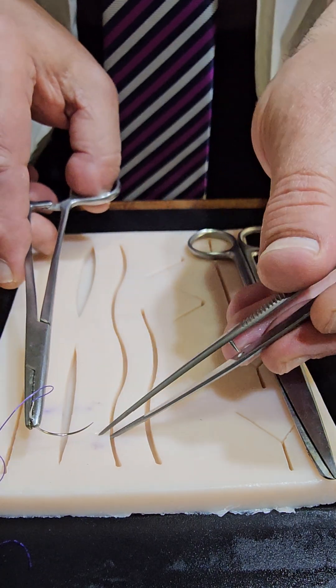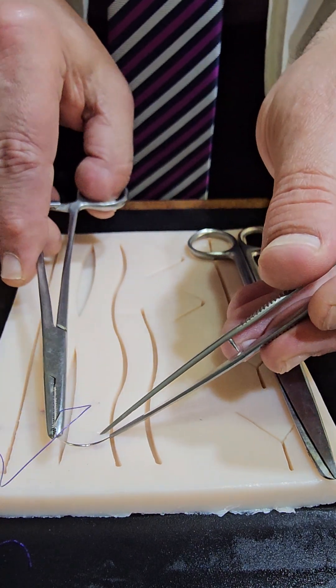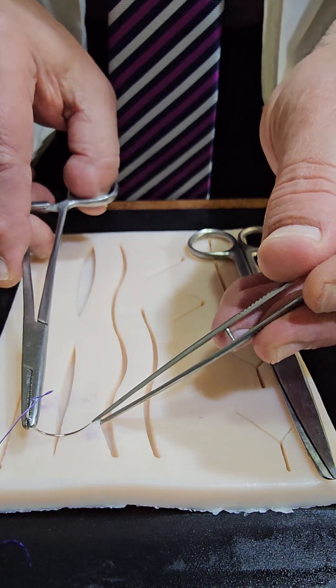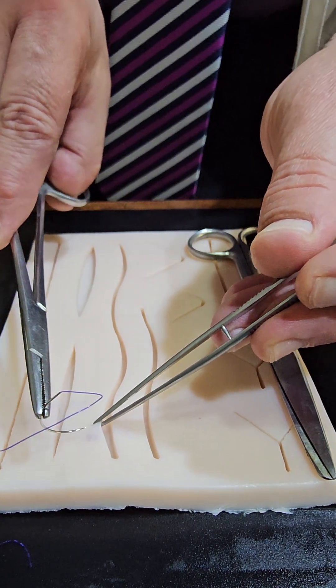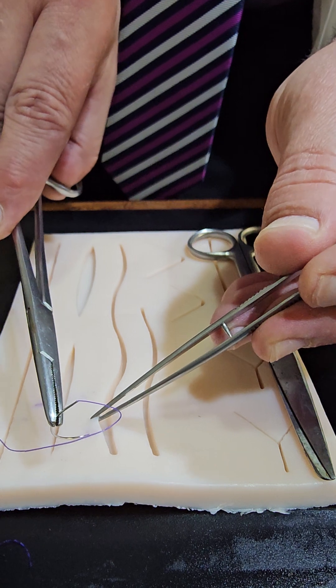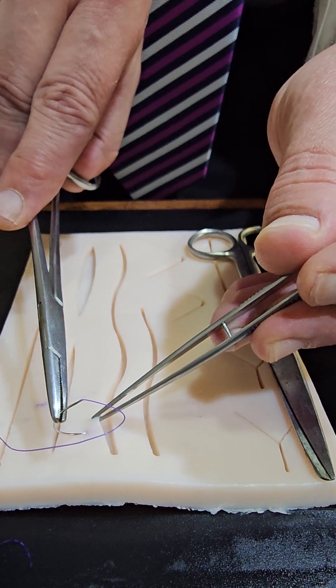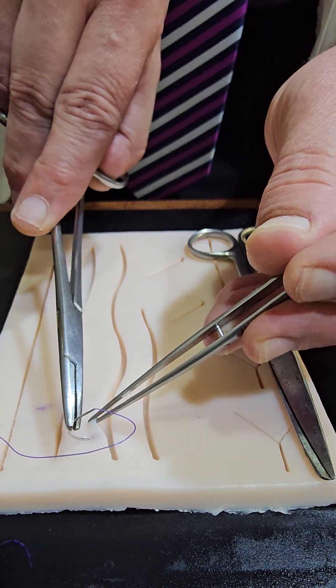First bite five millimeter from the edge. By tissue forceps elevate the edge like this. Ninety degree with the skin the tip of the needle should be. Then take the first bite like this.